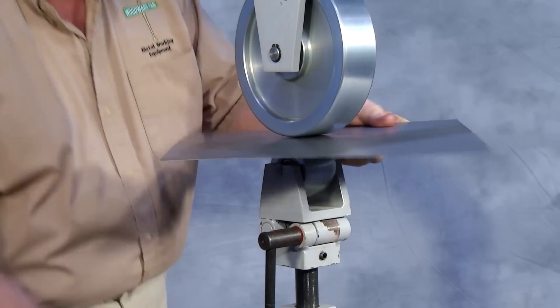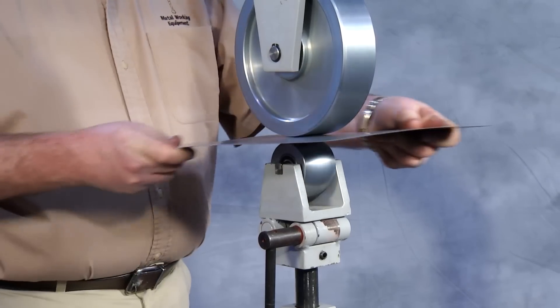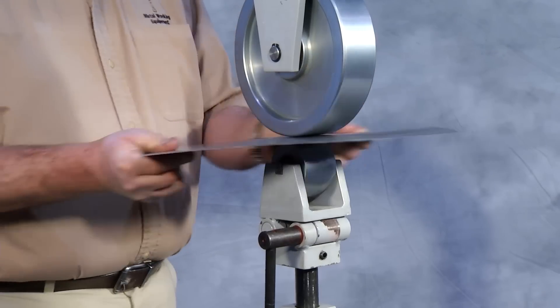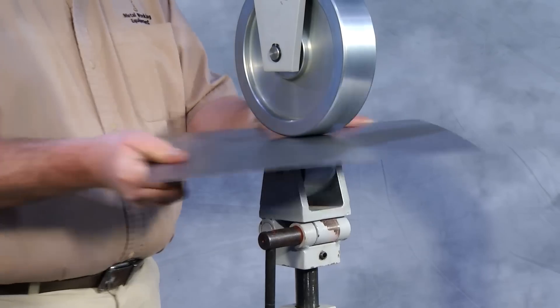As we move the material back and forth, the forming begins. The more pressure we put on the stock, the more drastic the forming becomes.